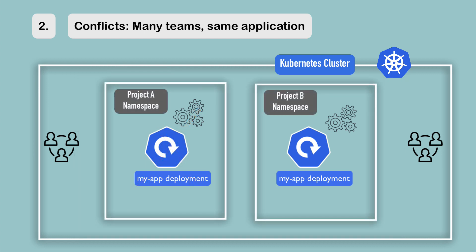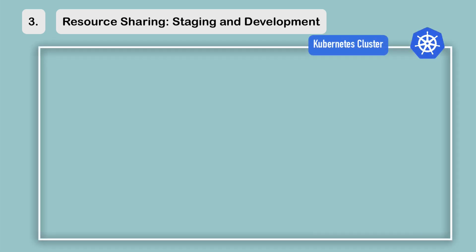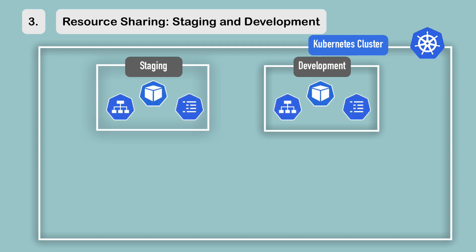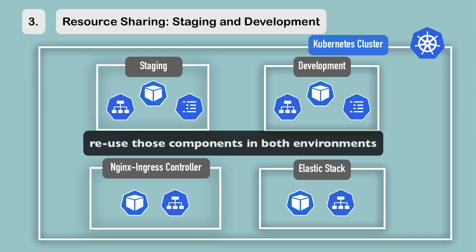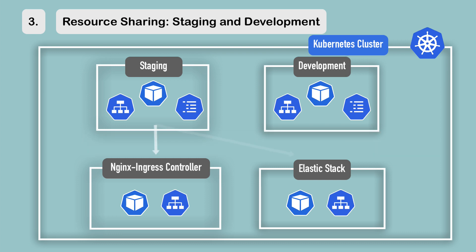To avoid such conflicts, you can use namespaces so each team can work in their own namespace without disrupting others. Another use case is when you want to host both staging and development environments in the same cluster. If you're using something like an Nginx controller or Elasticsearch for logging, you can deploy it once in the cluster and use it for both environments, so you don't have to deploy these common resources twice in two different clusters.